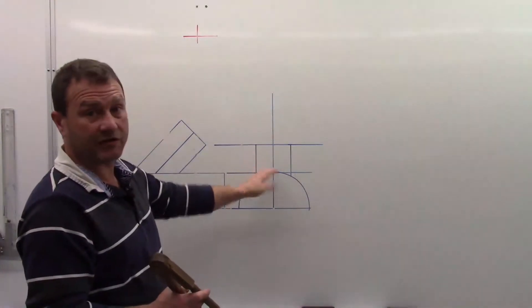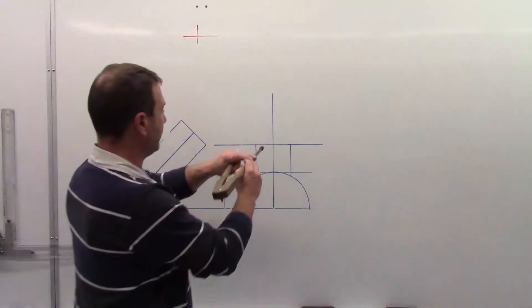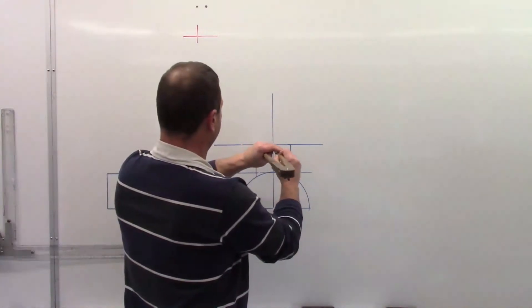We do have a line of symmetry here so we could cut off half it if we wanted to. I am just going to keep going with the full view here.